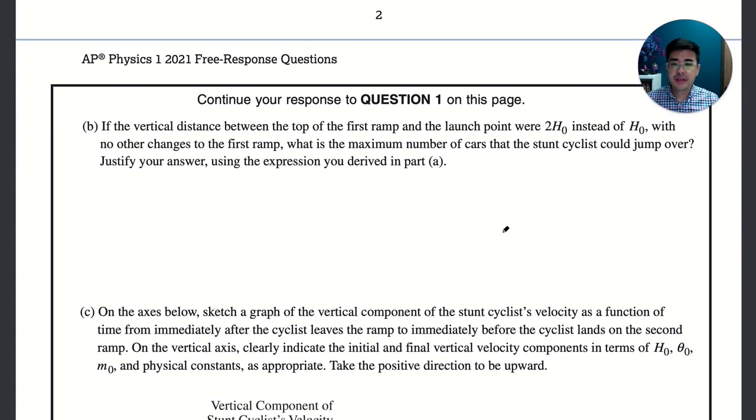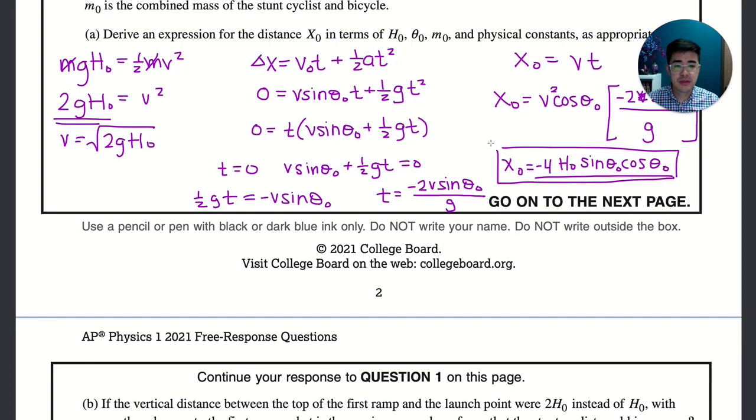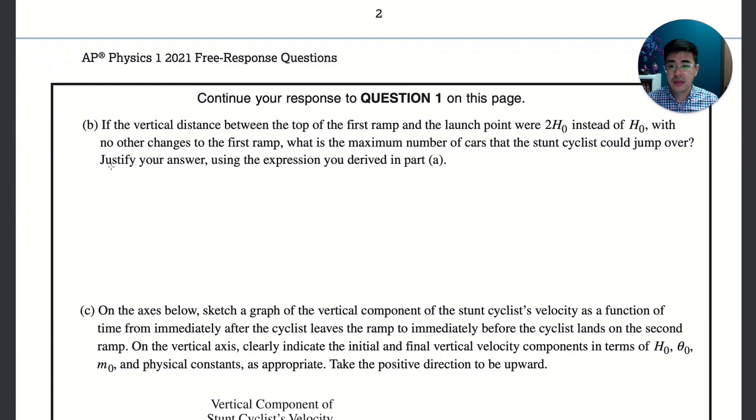Then it says if the vertical distance between the top of the first ramp and the launch point were 2h₀ instead of h₀ with no other changes to the first ramp, what is the maximum number of cars that the cyclists could jump over? Let's go back to our equation over here, so I can copy paste this whole thing. Let's copy that and put this over here.